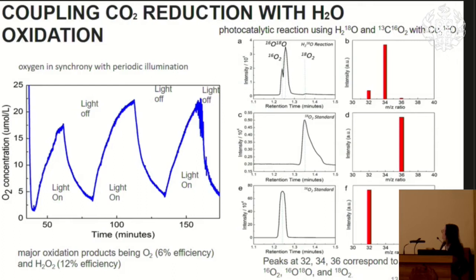We also surprisingly showed synchronous evolution of oxygen with the light — with the light on, you see oxygen evolution; with the light off, the evolution decreases. The efficiency was only 6% for oxygen. We found that hydrogen peroxide production is much higher at 12% efficiency. We think this is the problem: as a liquid compound, it stays adsorbed on the surface and accumulates, competing with CO2 reduction.